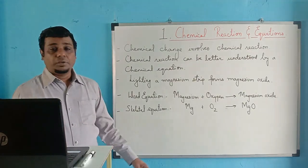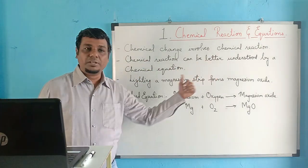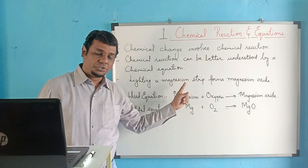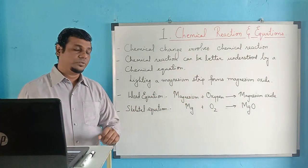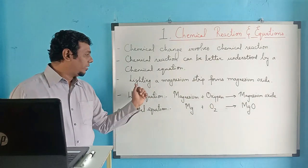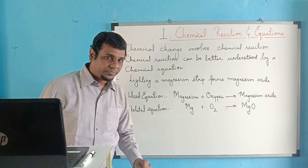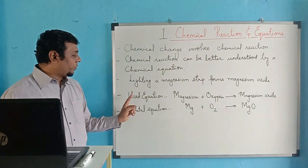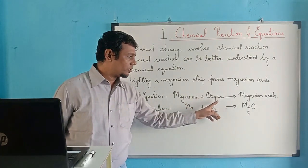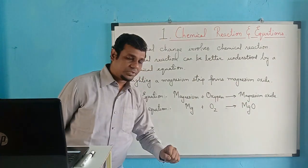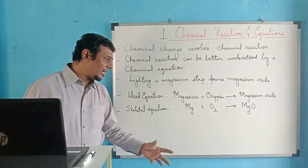Whenever there is a chemical change, you may see any of these four effects, which specifically indicates that a substance has gone through a chemical change. A chemical reaction can be better understood by a chemical equation. The equation is the generalized form of understanding a chemical reaction. For example, burning of magnesium strip forms magnesium oxide — in a word equation: magnesium plus oxygen gives magnesium oxide. But that is not fully generalized.